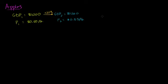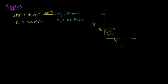Let me draw a diagram. On one axis I'll do quantity, on the other axis I'll do price. To figure out GDP in year one, I multiply the price of apples in year one (P1) by the quantity of apples in year one (Q1). The area of this green rectangle would be GDP in year one. GDP in year two would be the price in year two times the quantity in year two — we'll assume some growth has occurred. So GDP in year two would be the area of this entire larger rectangle.